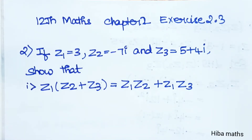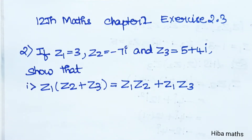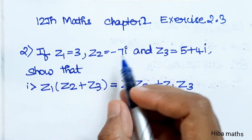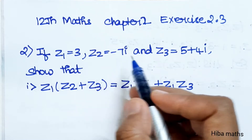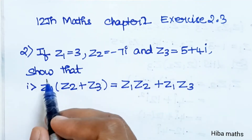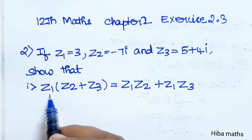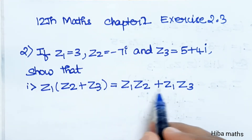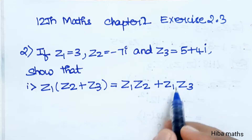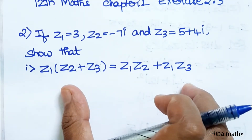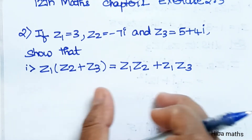Hello students, welcome to class 12 standard, Chapter 2, Exercise 2.3, second question. If z1 is equal to 3, z2 is equal to minus 7i, and z3 is equal to 5 plus 4i, show that z1 into (z2 plus z3) is equal to z1 into z2 plus z1 into z3. So this is the proof — LHS equals RHS.